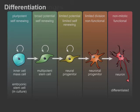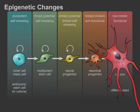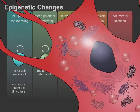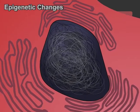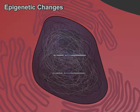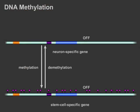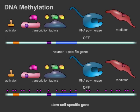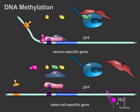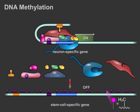As cells become more specialized, they undergo epigenetic changes that reinforce a new cell identity. Epigenetic changes are non-genetic changes that affect the reading of DNA without altering the DNA sequence. Gene expression is highly dependent on a gene's physical accessibility to transcription factors. DNA methylation, or the addition of methyl groups to specific cytosine bases, can repress or silence gene activity by preventing transcription factors from binding to a gene's promoter.